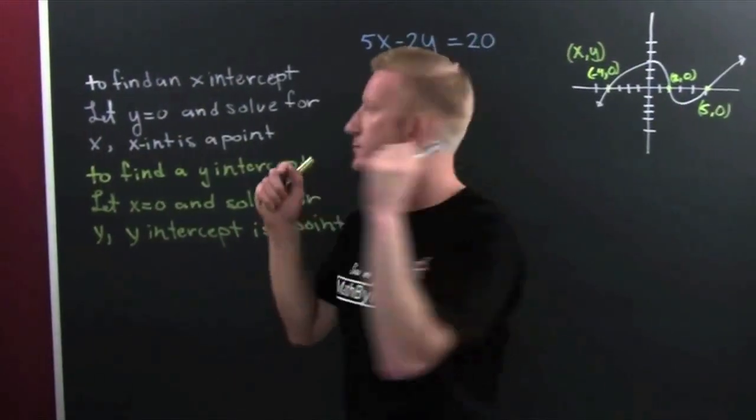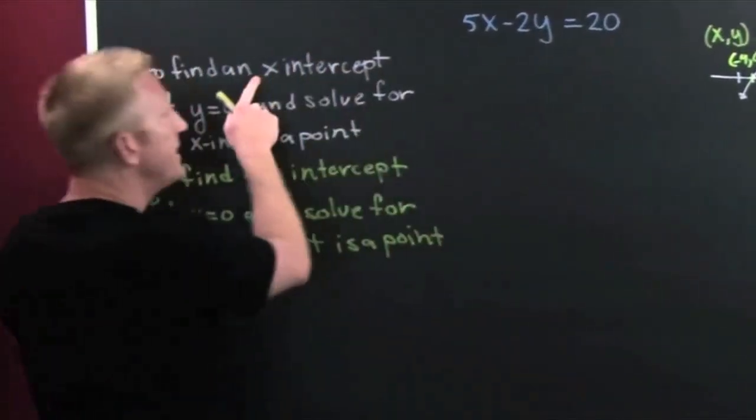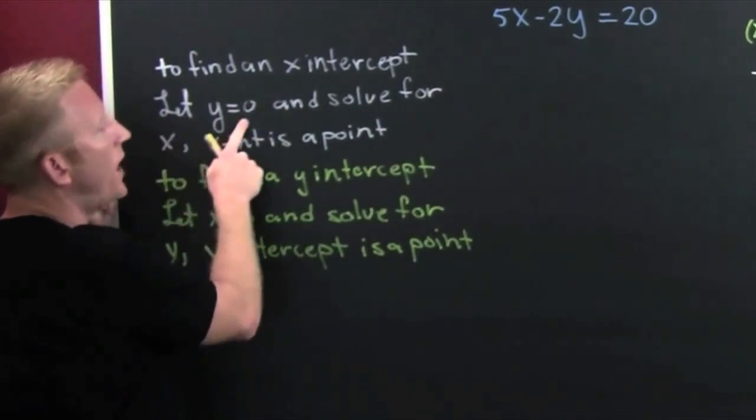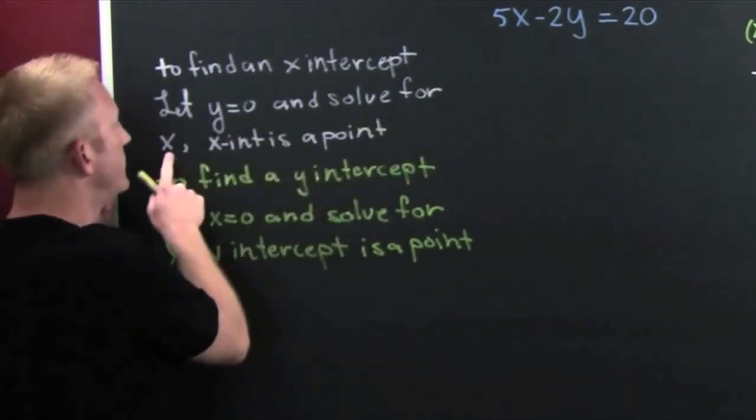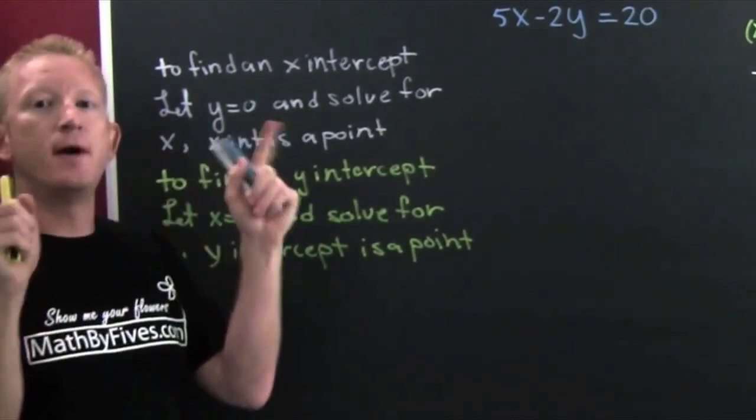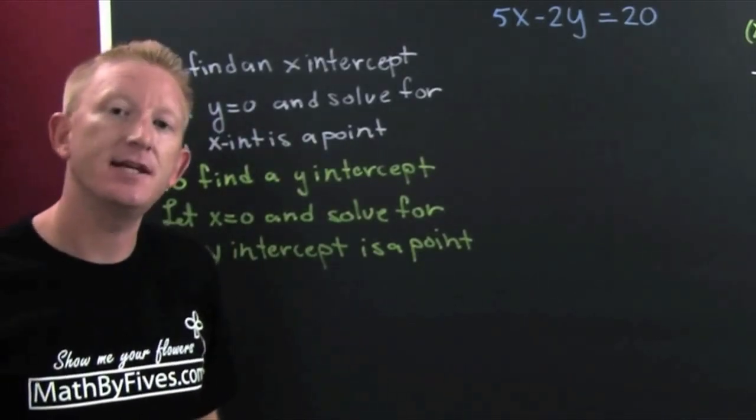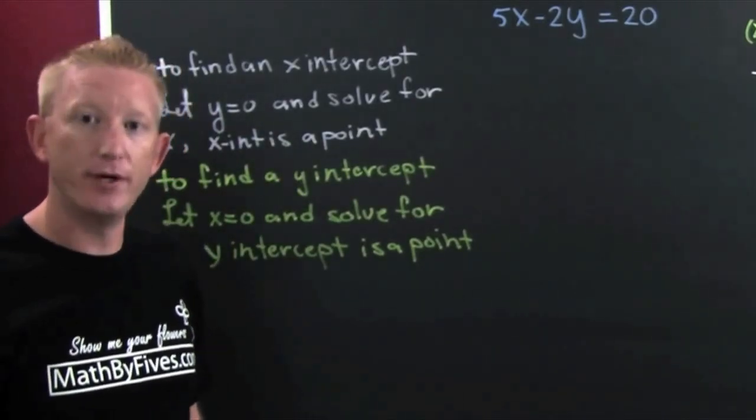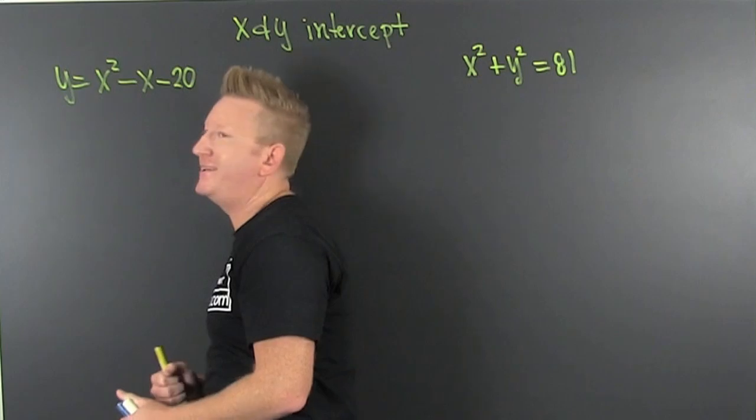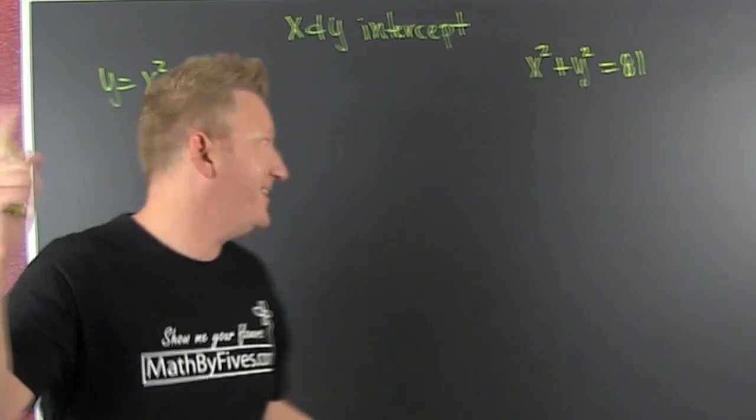And now we go over here. To find an x-intercept, you let y equal 0 and you solve for x. What's my point? My point is the x and y-intercepts are points. That's right. You ready?